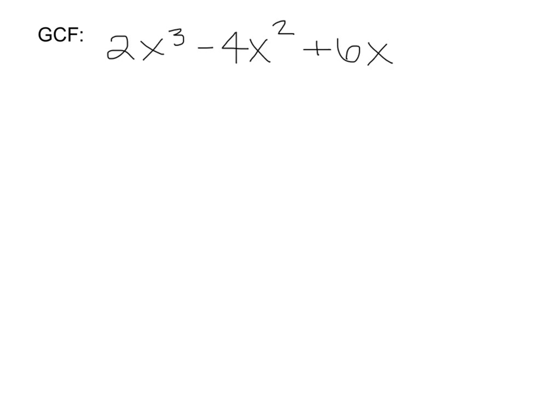Before you go to do every problem, you should always check for the GCF first. So is there something that goes into 2x cubed that also goes into 4x squared that also goes into 6x? Hopefully you're all saying yes — that 2x goes into all of that. So 2x cubed divided by 2x leaves me with x squared, minus 4x squared divided by 2x leaves me with minus 2x, and 6x divided by 2x leaves me with 3.